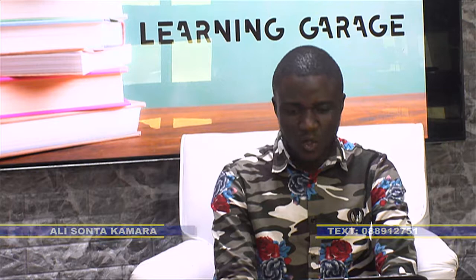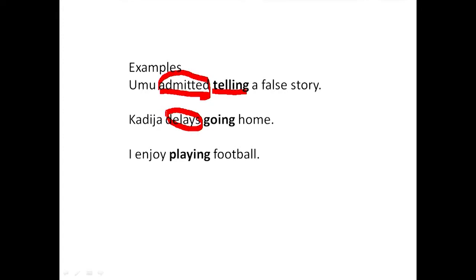'Kadeja delays going home.' We have going because delay is a word that attracts a gerund. Another example: 'I enjoy playing football.' We have an ING element just after the verb enjoy. So whenever we use enjoy, admit, delay — we require an ING element, which is called a gerund. If you have a clear idea about these words and know that when you use them you require an ING, let's now look at some past questions.